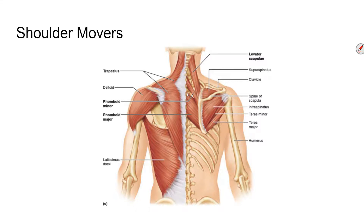Then there are the rhomboids — a group of major and minor, based on their size. Their purpose is to stabilize the scapula and keep it from moving more than it should. They are rhomboidal in shape, which is where they get their name. So those are the four muscles for this shoulder region.